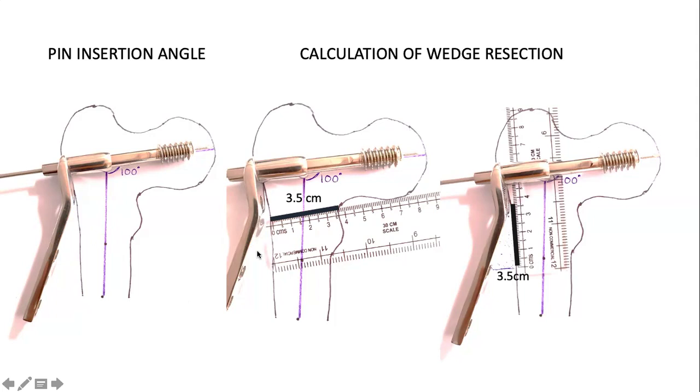So one practical tip is, once you have put the wire, you put the screw, then you put the barrel plate. That is the time you mark on the outer aspect of the femur where the barrel plate is seating. So your top osteotomy should end here, so that the osteotomy closes well and the femoral shaft sits on the plate.